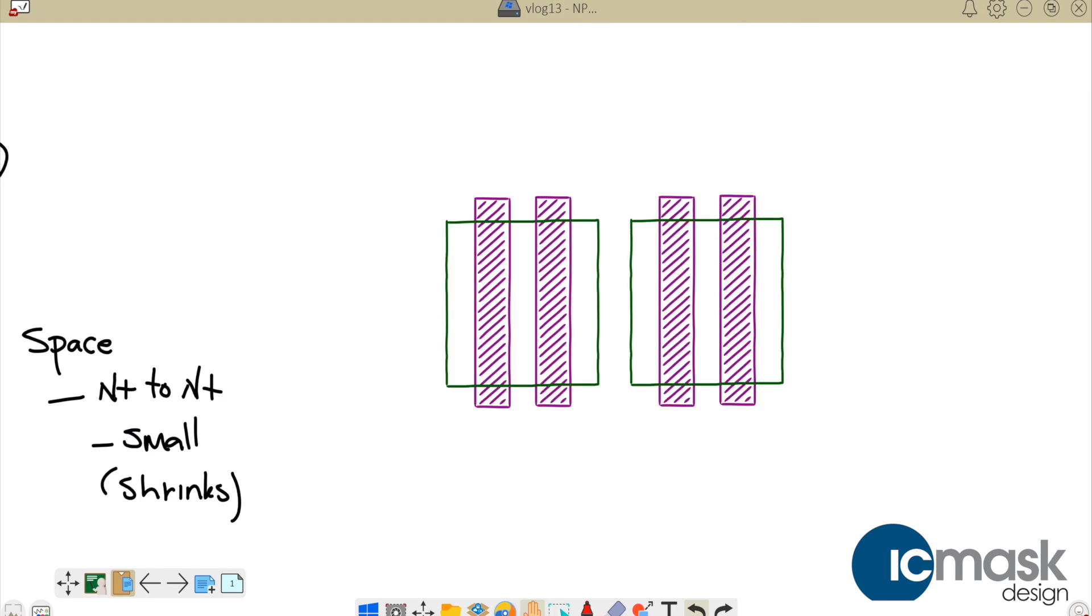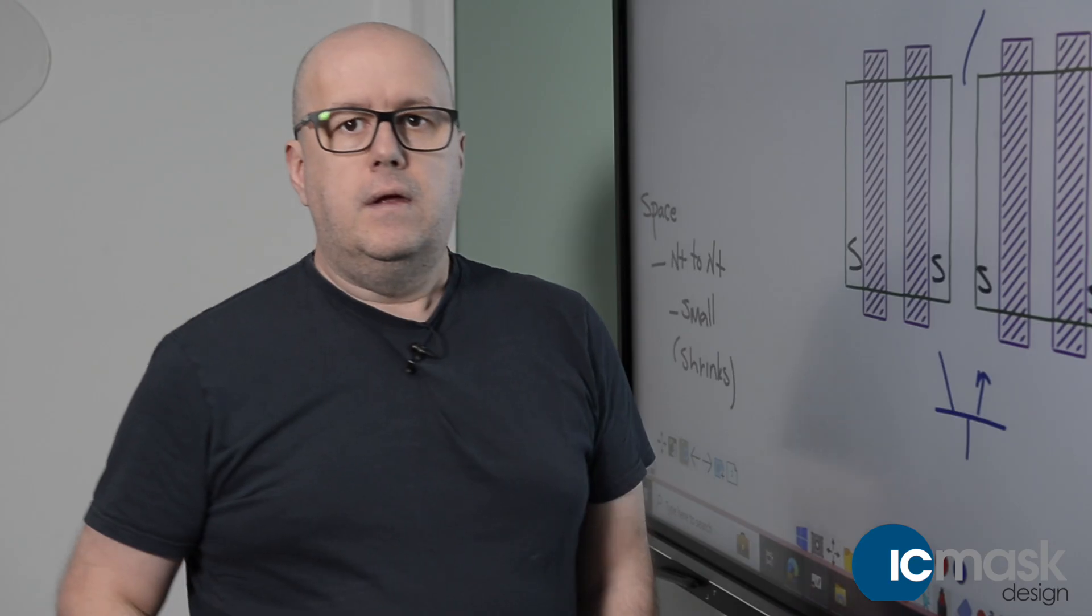Now we have our sources on the outside. We still have our parasitic bipolar transistor, this is still a thin base, but the difference now is our switch effectively is now between VSS and VSS. This is just another reason why NF equal even should generally be preferred over odd finger devices.